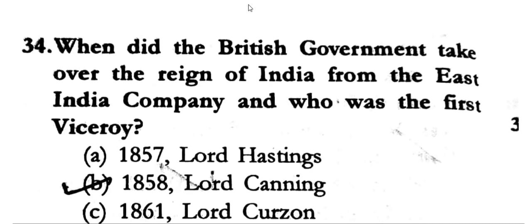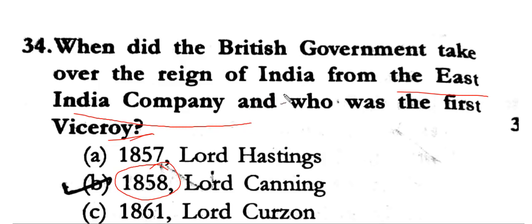Next important question: when did the British government take over the reign of India from the East India Company, and who was the first Viceroy? In 1858, the British government took power from the East India Company. The first Viceroy was Lord Canning.